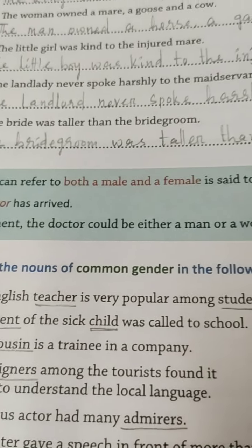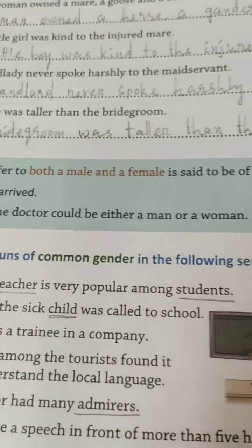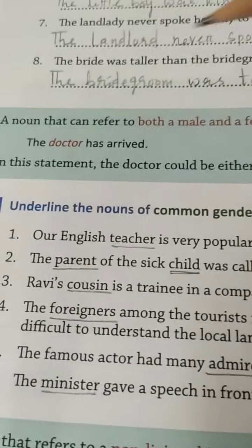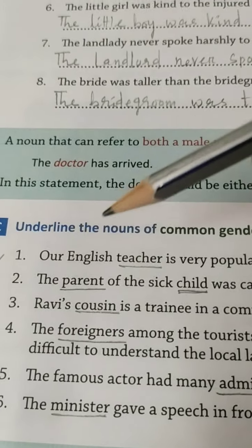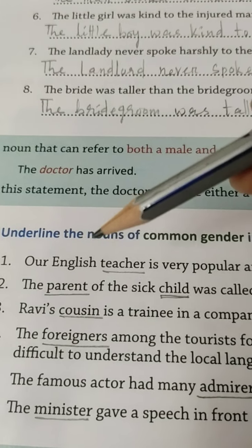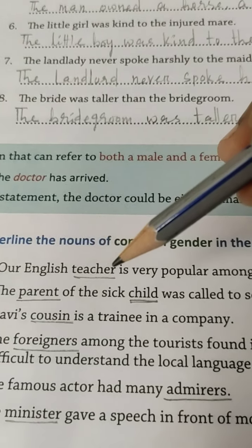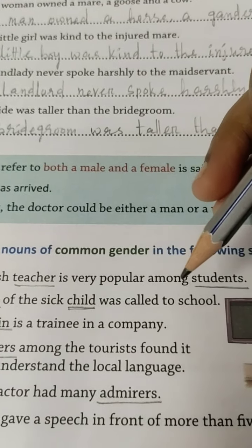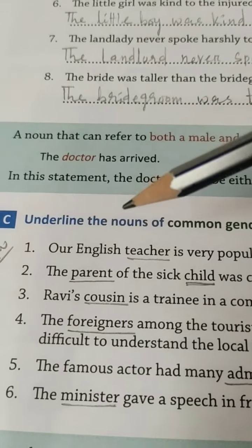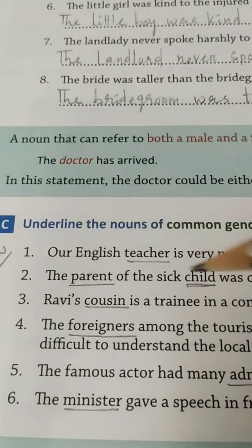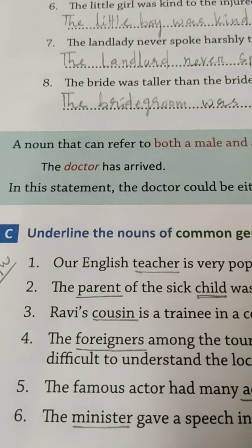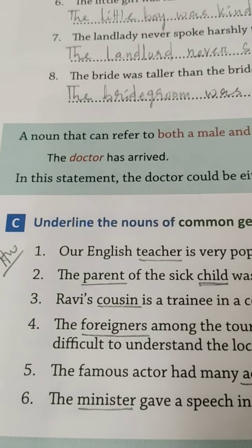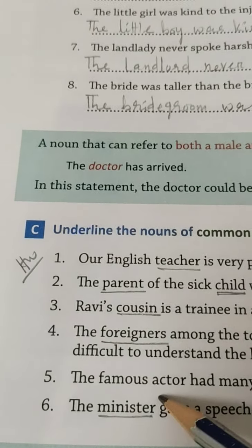Underline the nouns of common gender in the following sentences. Number 1: Our English teacher is very popular among students. Number 2, children — like this you have to do. This is your homework.